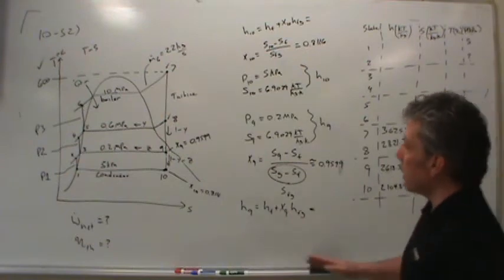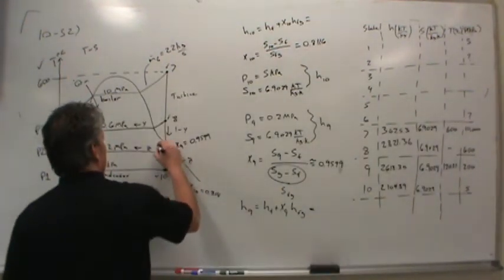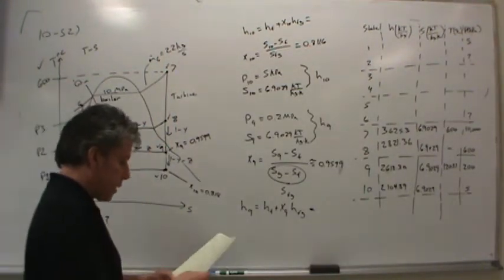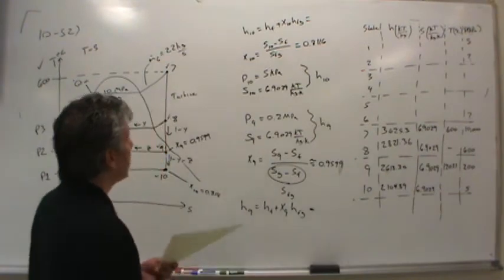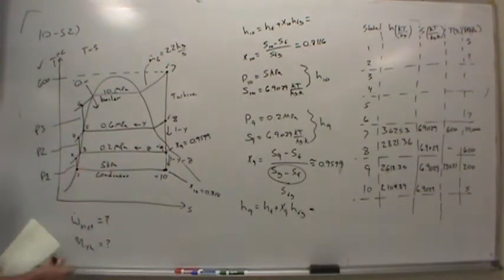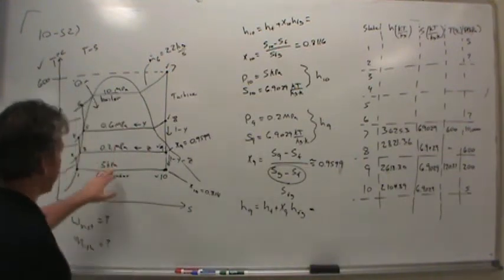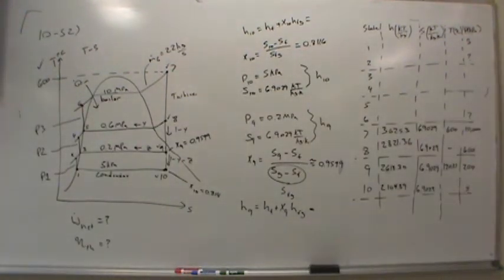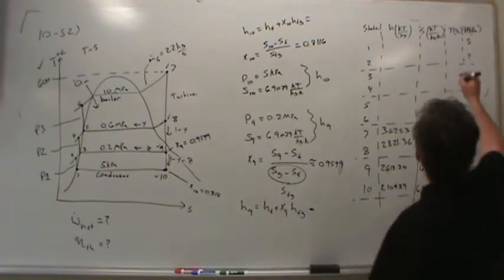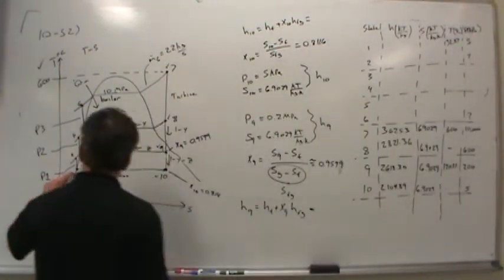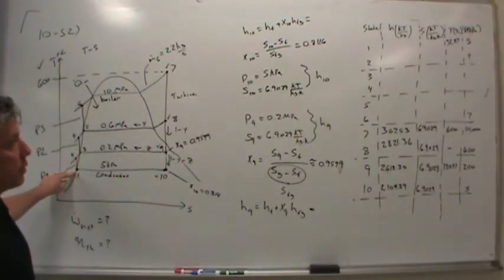So that takes care of all of the states on the right-hand side of the diagram. Let's continue with state 1. State 1 is actually pretty easy — state 1 is on the saturation line. All we need to do is look up the temperature at 5 kilopascals. That's 32.87, so the temperature of the condensate at state 1 is 32.87 degrees Celsius.